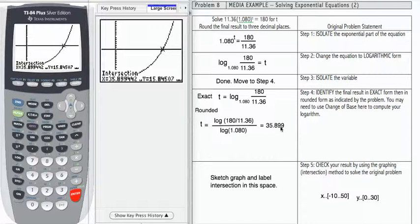You can also take 35.899, plug it back into the original and see how close you get to 180.